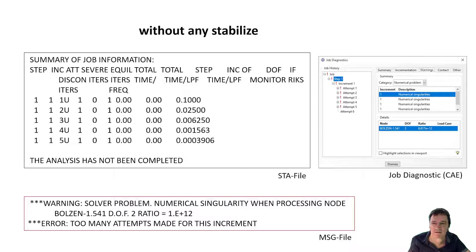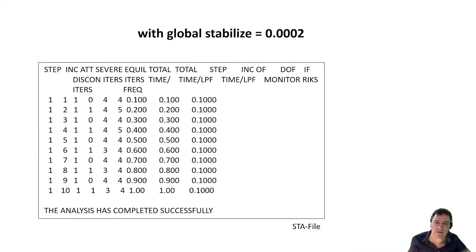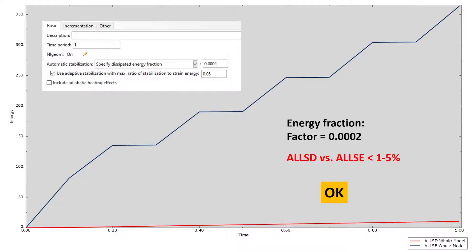The message file shows the warning about numerical singularity, as already expected. You can also check this in CAE with Job Diagnostics. In the second calculation, a global stabilize with a smaller factor is used. The calculation converges to the end and completes successfully. The control of the ratio of energies is okay.